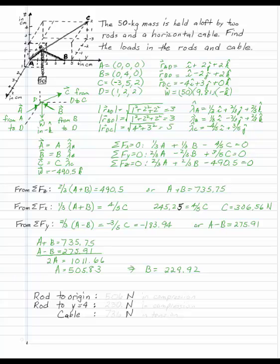Remember that as we did this, we assumed that the rod was pressing from the origin up to b. So the rod on the left gives us 506 newtons in compression. The rod on the other side gives us 230, and I want a decimal there to make it 3 sig figs in compression. And the cable is 736 newtons in tension, which is good, because ropes can't push.